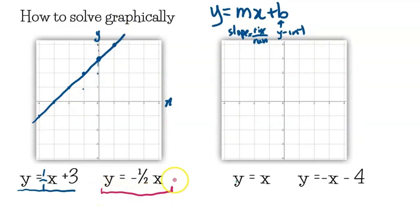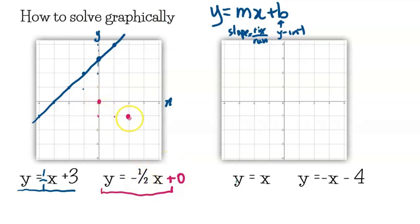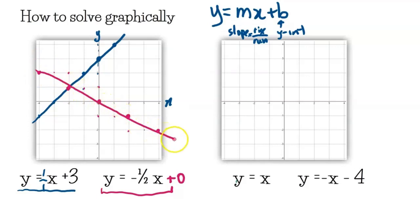Our second line has a y-intercept of 0 — it's understood as plus 0. We start at 0 on the y-axis and the slope is negative 1 over 2, so we go down 1 and run 2, or up 1 and backwards 2. Drawing that line, our solution — where the two lines cross — is at negative 2, 1.